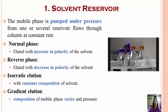The first component is the solvent reservoir — the main component. We can make many changes with this component. The mobile phase is pumped under pressure from one or several reservoirs kept above the column. We can use different mobile phases and do combinations when we are interested in separating components.